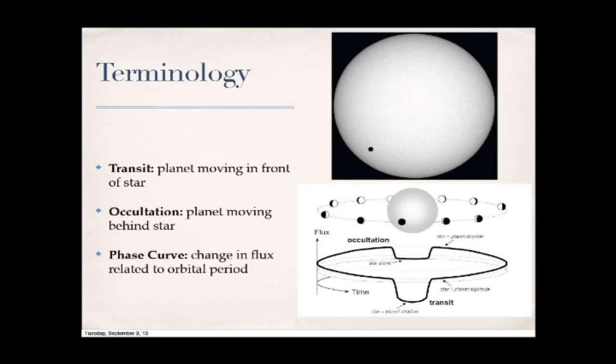The occultation is when the planet moves behind the star. If you're operating a photometer without the resolution to resolve the two objects, you're seeing the combined light from the star and planet. When the planet goes behind the star, you only see the star's light, producing a drop in flux. The schematic shows an orbit with flux: a deep transit in front, followed by a shallower drop — the occultation — when the planet goes behind the star.